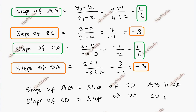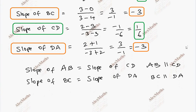Now, slope of BC equals slope of DA — this is the same value, minus 3. So BC is parallel to DA. Since opposite sides are parallel, it forms a parallelogram.